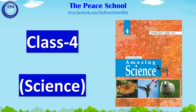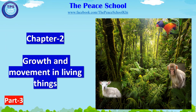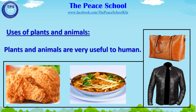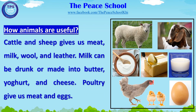Assalamu alaikum students. Class 4 Science, Chapter 2: Growth and Movement in Living Things. Uses of plants and animals — plants and animals are very useful to humans. How are animals useful? Cattle and sheep...